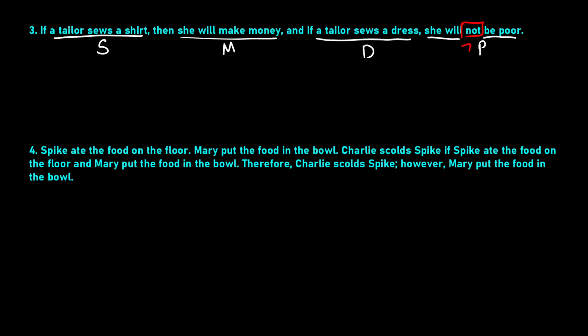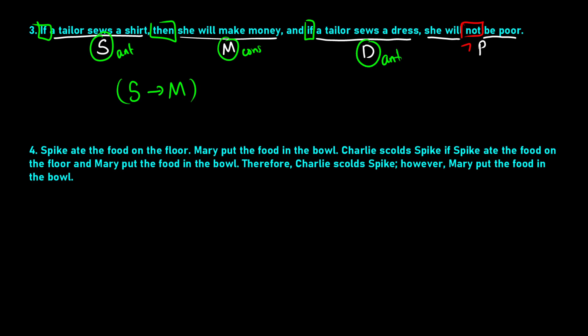We have some IFs and THENs. If a tailor sews a shirt comes after IF, so this is our antecedent, and everything after THEN is our consequent. So: if a tailor sews a shirt, then she will make money — we translate the first half as S → M. On the right side we have another IF-THEN, but the THEN is hidden. The antecedent is 'a tailor sews a dress,' which is the condition, and 'she will not be poor' is the consequent. So the right side translates as D → NOT P.